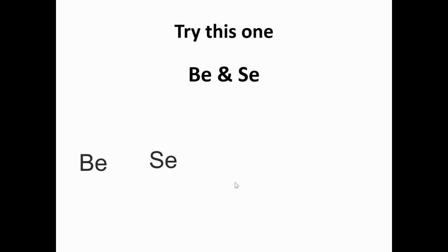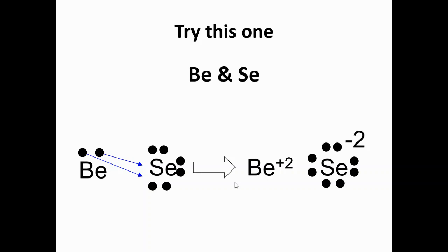Okay, so BE plus SE. BE has two electrons in the valence electron area and SE has six. So what's going to happen? All right, so BE is going to transfer over those two electrons, and then BE will have a positive two charge and the SE will have a negative two charge. Therefore, this is an ionic bond. They are equaling each other out, and because opposites attract, they'll become neutral.